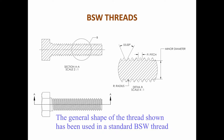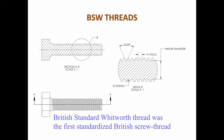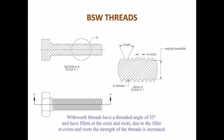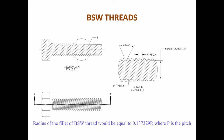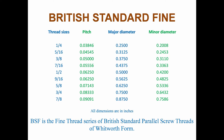The British Standard Whitworth (BSW) thread was the first standardized British screw thread. Whitworth threads have a thread angle of 55 degrees and have fillets at the crest and roots. Due to the fillet at crest and roots, the strength of the threads is increased. The radius of the fillet of a BSW thread equals 0.137329 multiplied by the pitch (P). BSW threads are used by the British Navy and its railways.